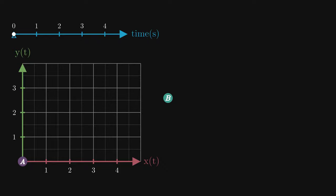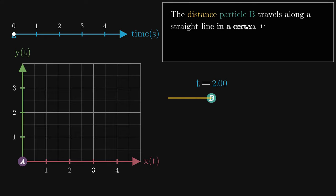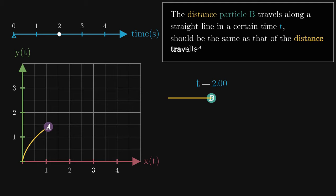The specific instruction we'll give to particle B in our context is as follows. The distance particle B travels along a straight line in a time t should be the same as that of particle A.